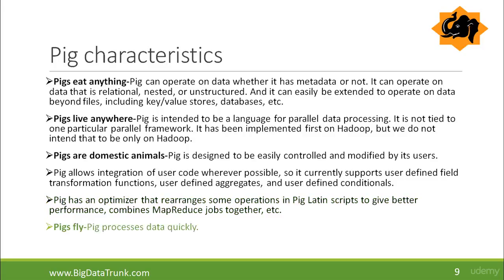Pigs fly. Pig can process data quite quickly. Pig is a preferred choice over MapReduce and PigLatin is much lower cost to write and maintain than Java code for MapReduce. So Pig with these good characteristics is a preferred choice over MapReduce.